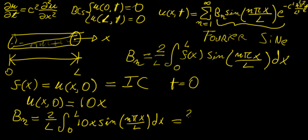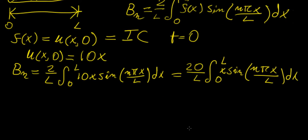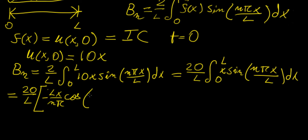Taking the 10 outside gives us 20 over l. Now we're going to use integration by parts, as we have done before, to find those coefficients. Let's integrate the sine part first.